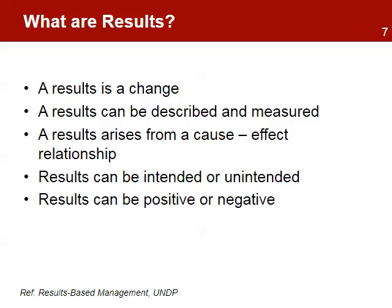A result is basically a change in a condition or situation. Measurable change means we have the means to know that the change can be measured and will show us the progress made. The cause-effect relationship means that the change occurs from a series of actions that, applied at the right time and in the right context, produce the desired effect. These changes can be intended or unintended, and negative or positive.